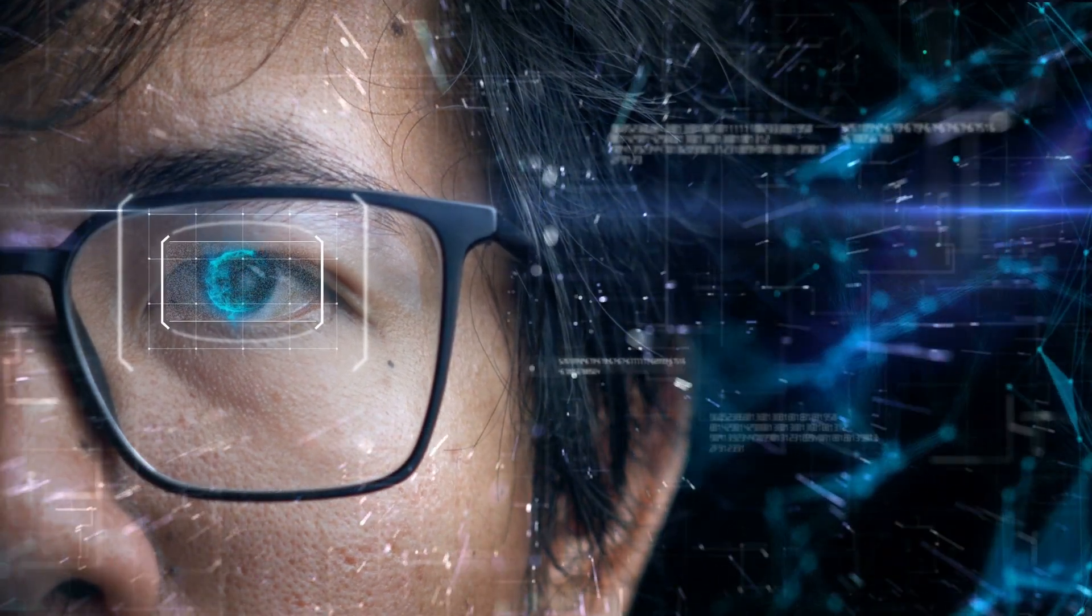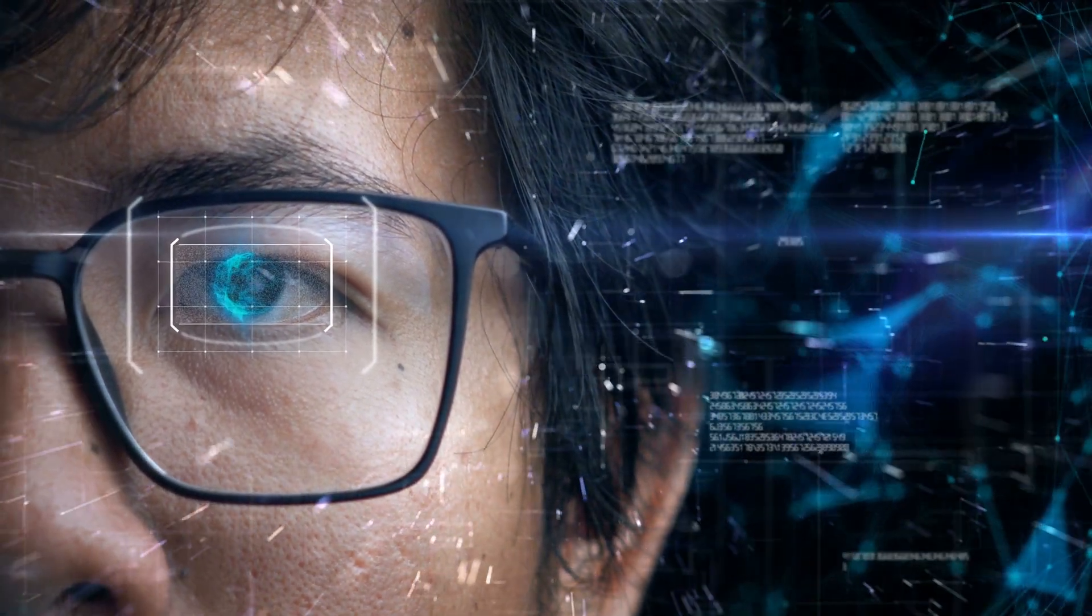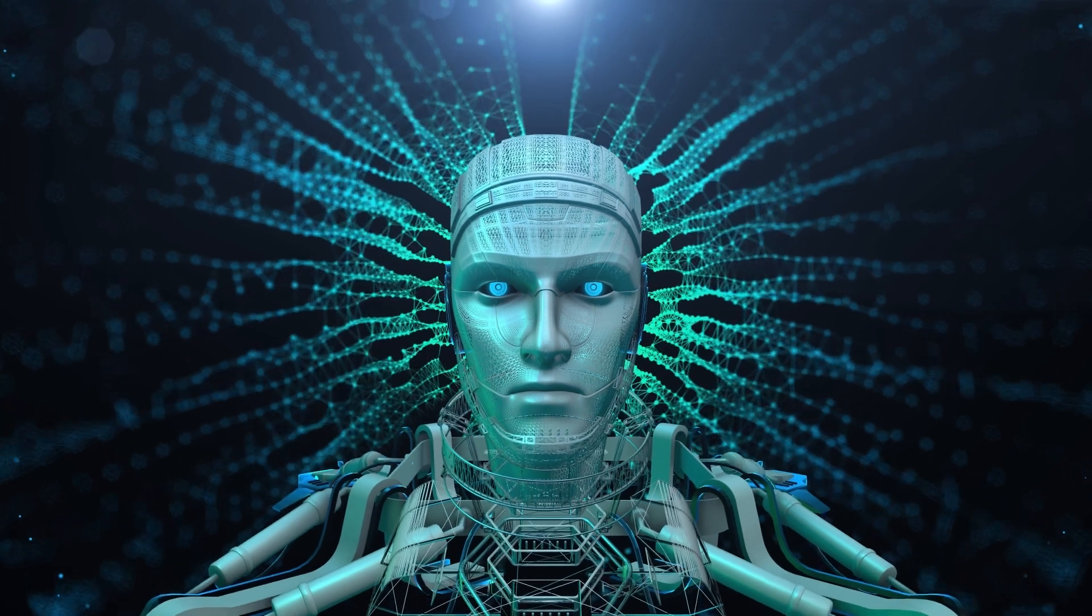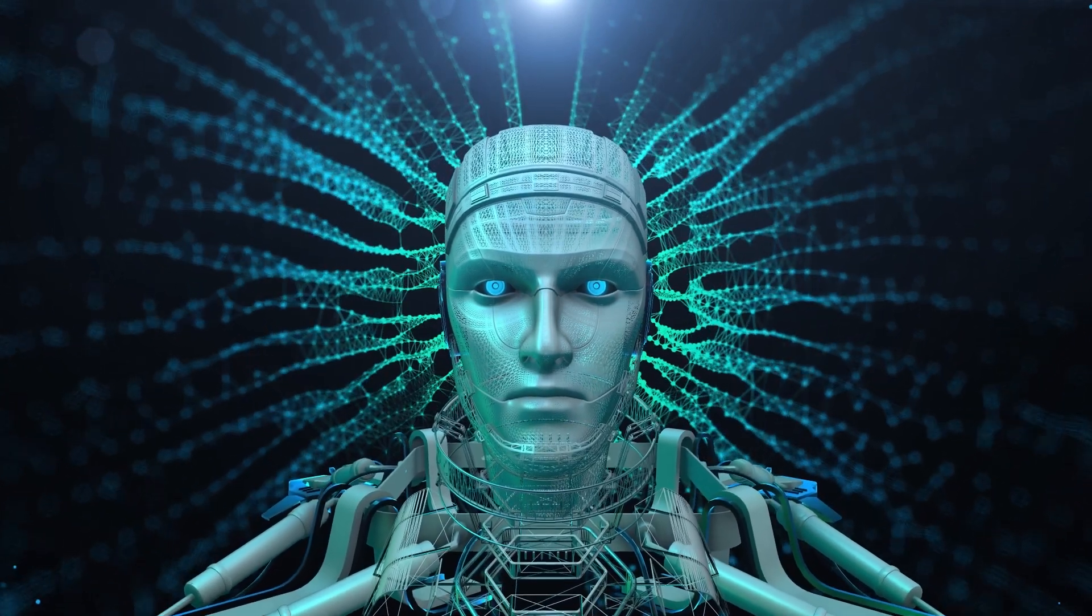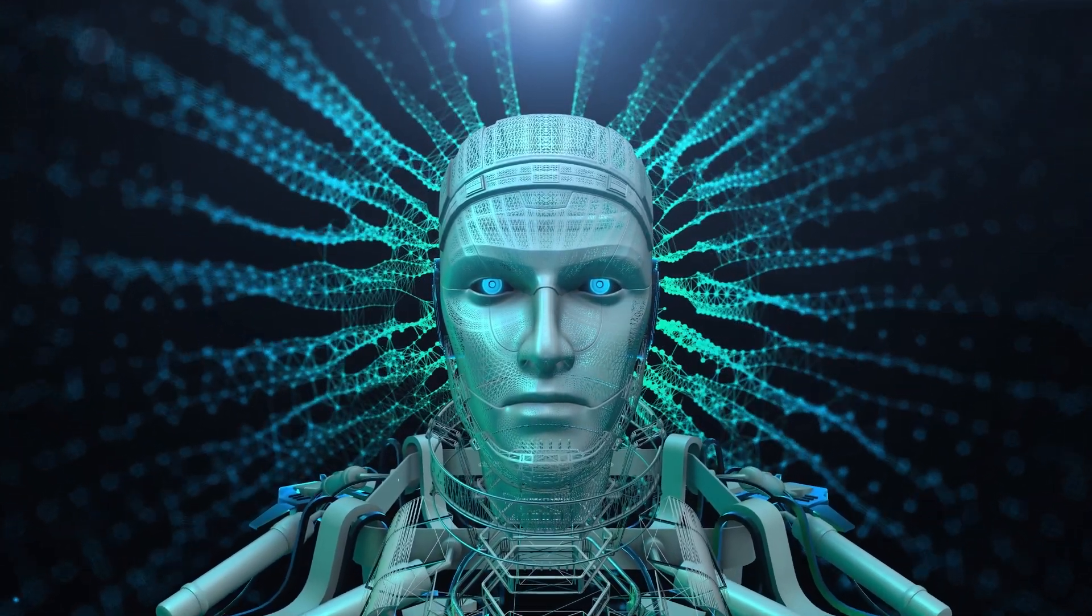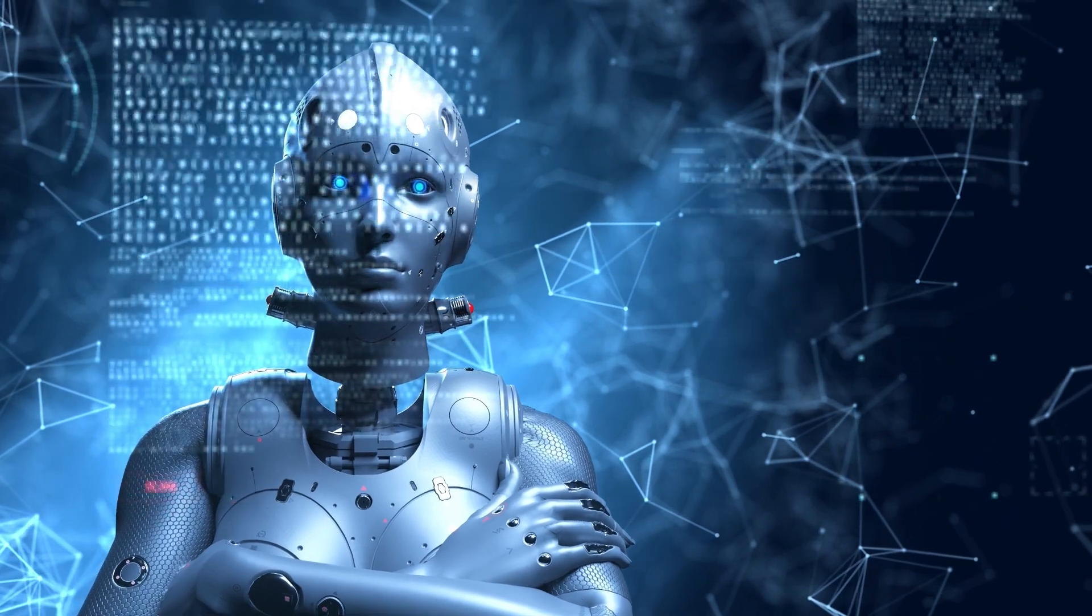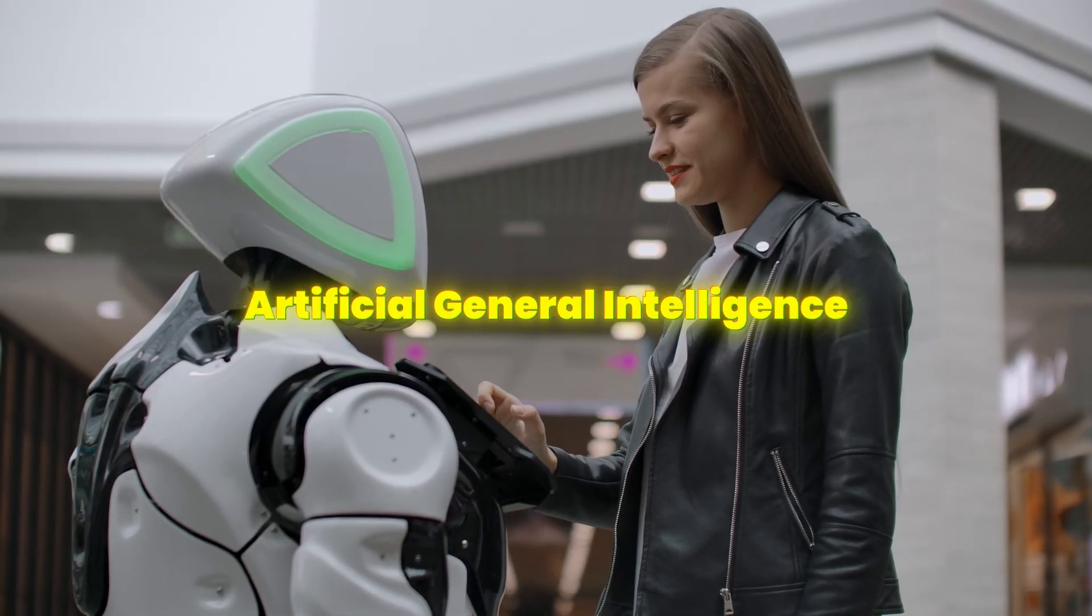Artificial intelligence has come a long way, but there's a key distinction between what we have now and what's envisioned for the future. To get a better grasp of the concept, imagine an intelligence that plays chess like a grandmaster, but can also write a beautiful sonnet about the experience. That's the core idea behind artificial general intelligence.